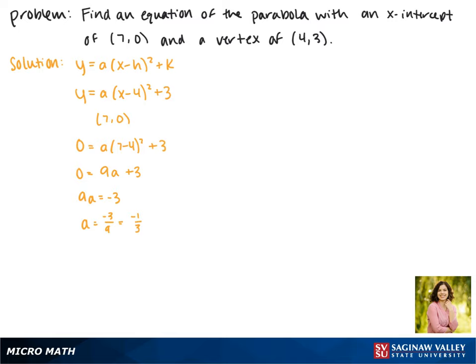Now when we plug this in, the equation of our parabola is y equals negative 1 third times (x minus 4) squared plus 3.